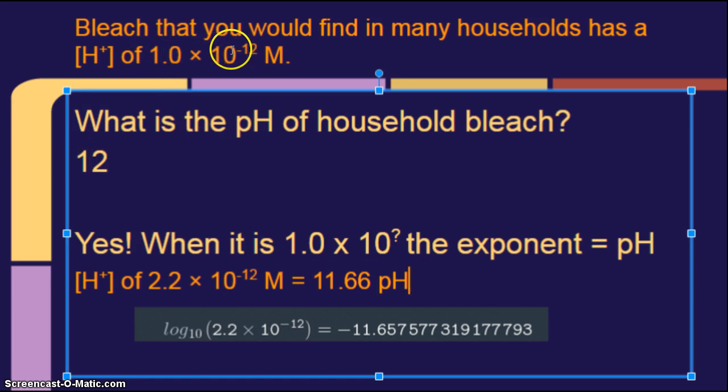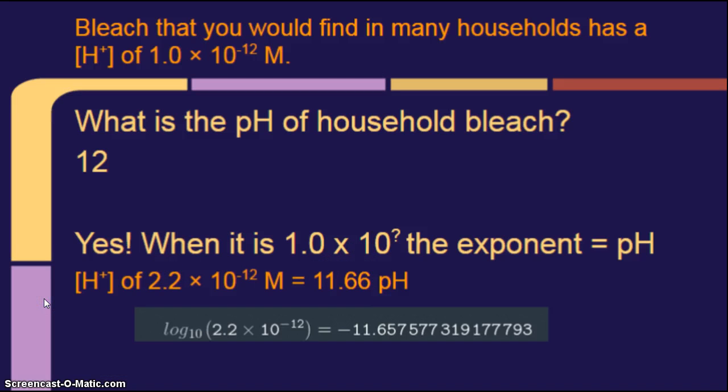Now, remember I said if it's just 1 times 10 to the, you can use the exponent as the pH. Well, here my exponent, you can say, well, it's pretty close to 12. And so that's a good way to kind of check your answer to make sure that it's at least close to what it should be. So I know my answer should be between 11 and 13, right? My answer should be between 11 and 13. If my answer turned out to be like 5, well, then I knew I did something wrong. So just an easy way to check up on how you're doing with your math.